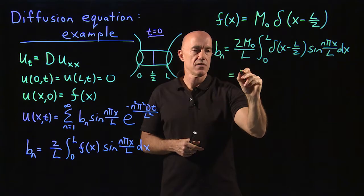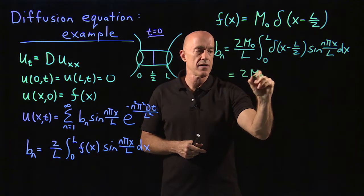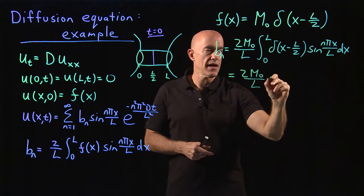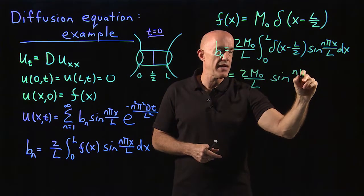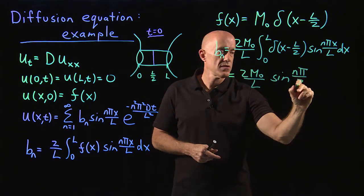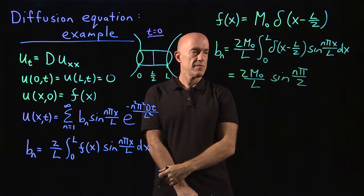So this is two M naught over L times sine x equals L over two. So n pi over two. That's the solution for B sub n.